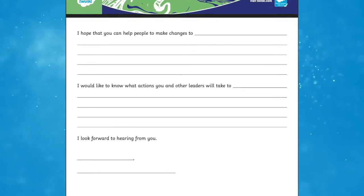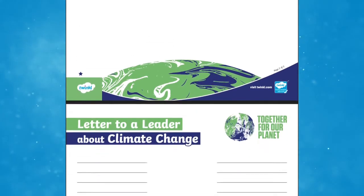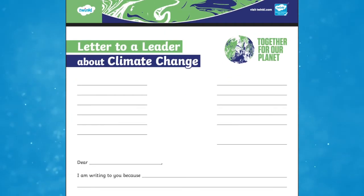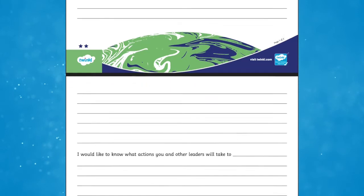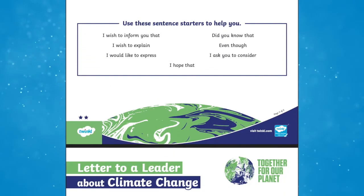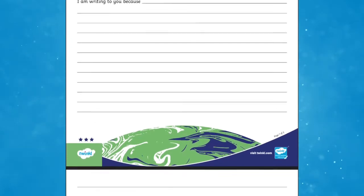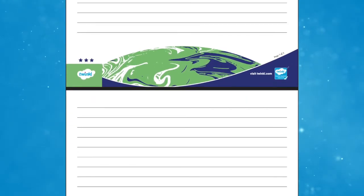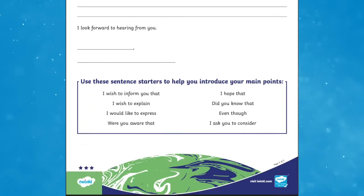Your pupils are certain to be engaged with this activity as they do their part to positively impact the future of our planet. With a variety of activities and resources within the lesson pack, your children will also be able to practise and develop their reading and writing skills as well as their critical thinking skills. They will be encouraged to use their language skills to write a persuasive letter to a world leader and have a thought-provoking conversation about climate change throughout the lesson.